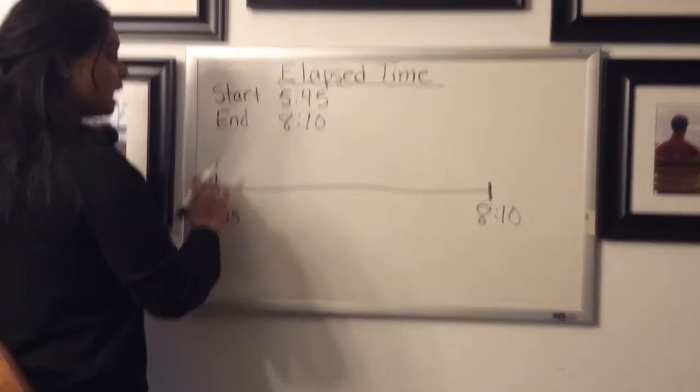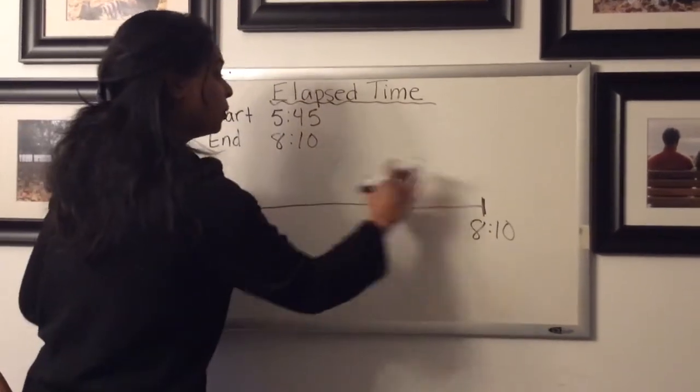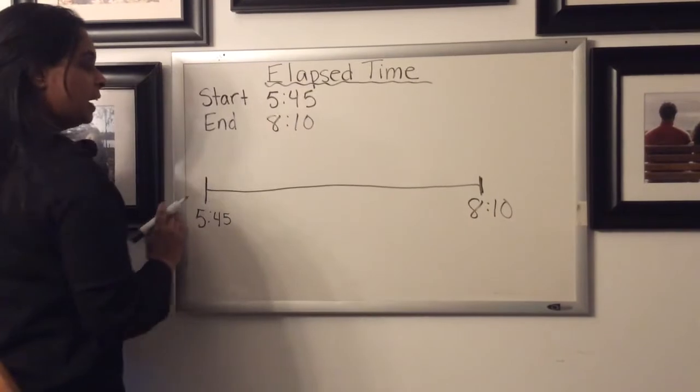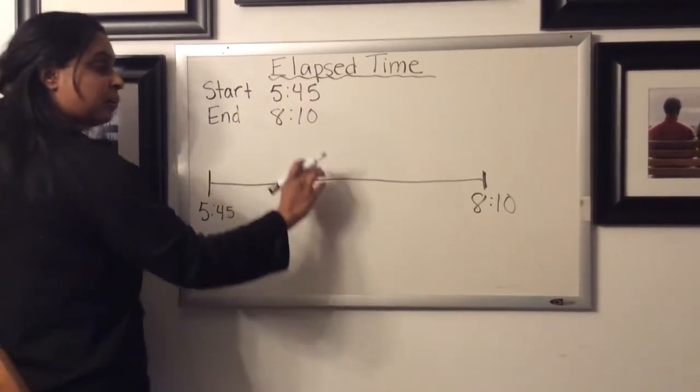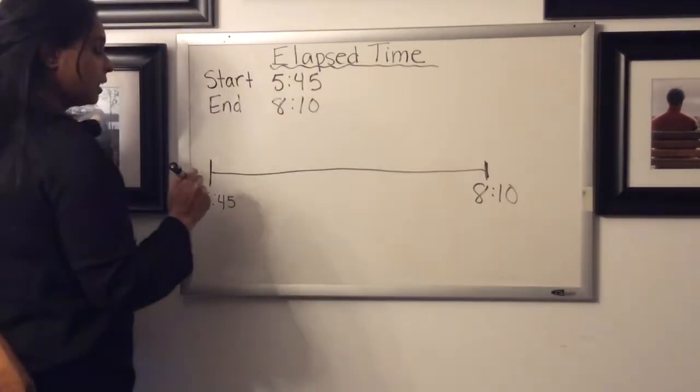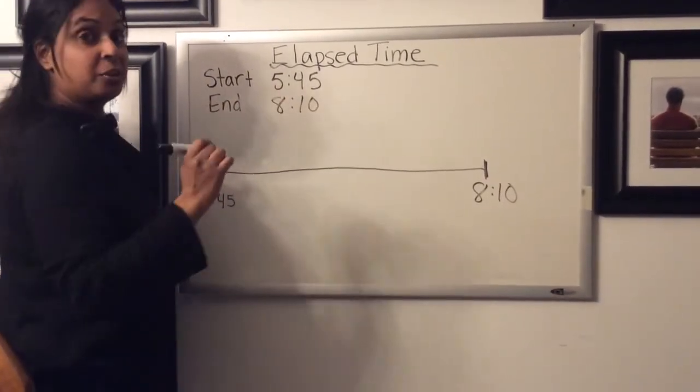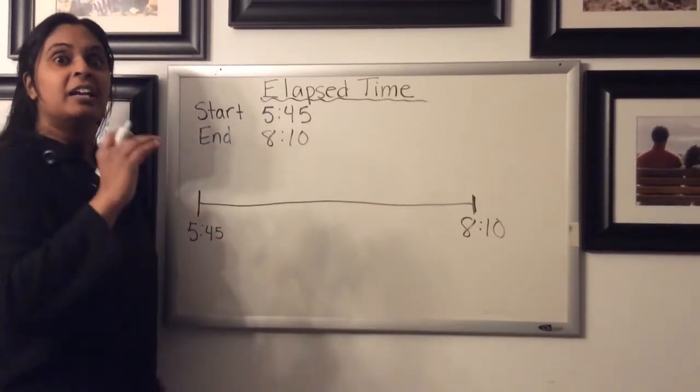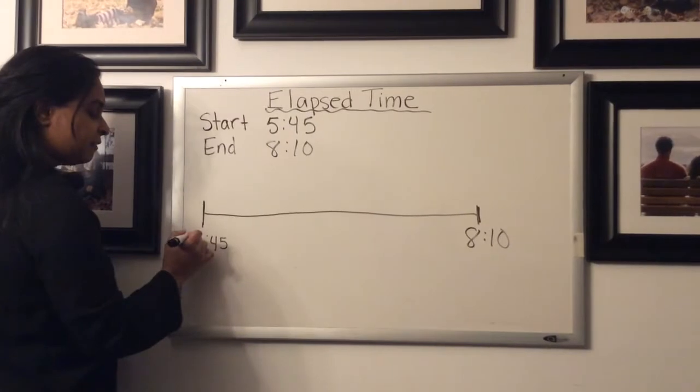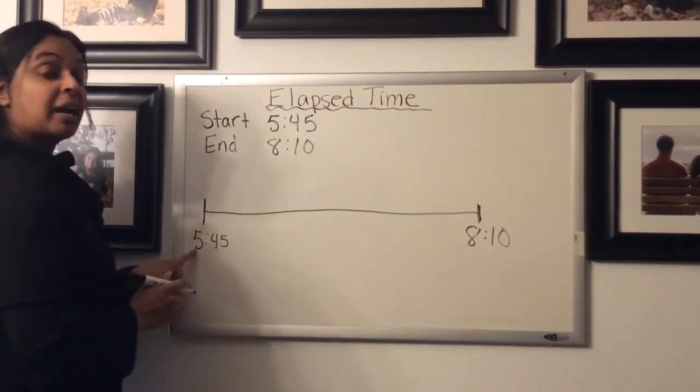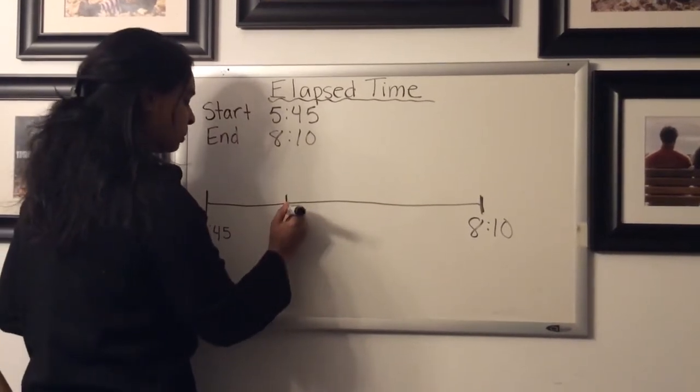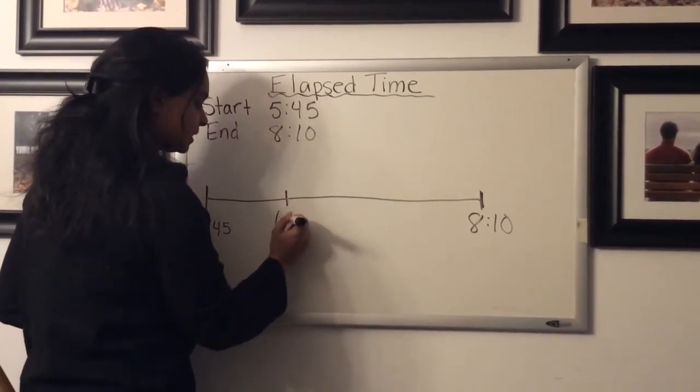So we're going to use this timeline to count forward and find the difference between these two times. So we're going to see how much we have to count up from 5:45 to get to 8:10. The first thing you're going to want to do when you use the strategy is you want to get yourself to the nearest hour. So we're at 5:45. The hour right now is five. So the next hour would be six. So that is where we'd want to travel first. We'd want to get to the next hour. We want to get to six o'clock first.